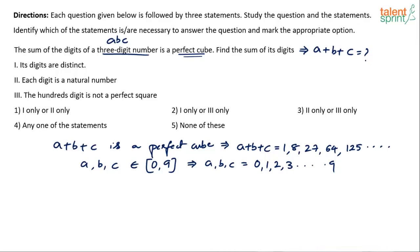We want it to be a three-digit number. So a cannot be 0. b and c can be between 0 to 9, but a will be between 1 to 9.